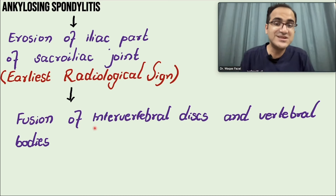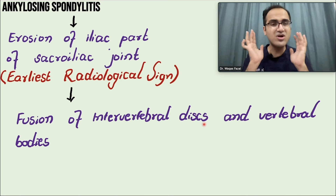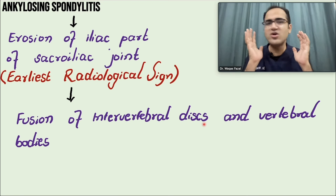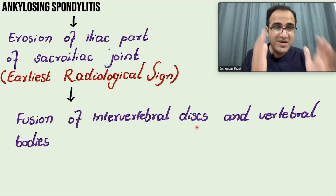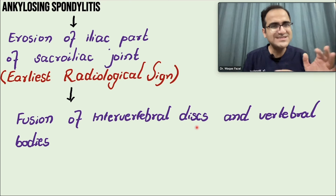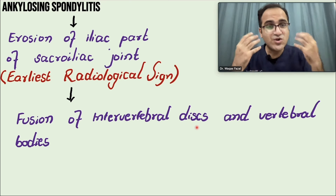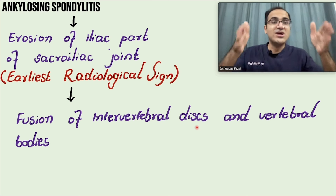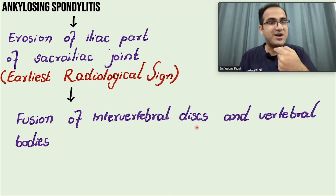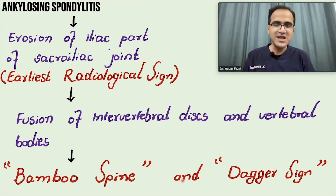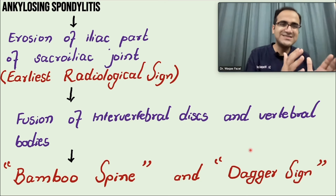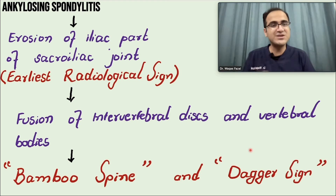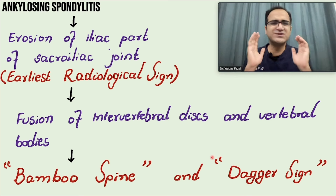The disease also damages the intervertebral discs between vertebrae, resulting in fusion and causing kyphosis. These patients cannot bend forward, bend their neck, or move easily. Unlike other seronegative arthropathies that involve peripheral joints, ankylosing spondylitis involves the central skeleton - spinal cord and sacroiliac joints - causing the spine to become 'bamboo spine,' with 'dagger sign' seen on X-ray.